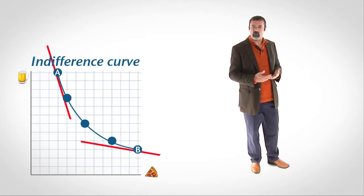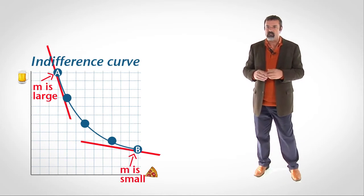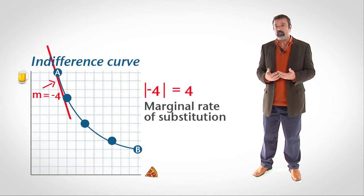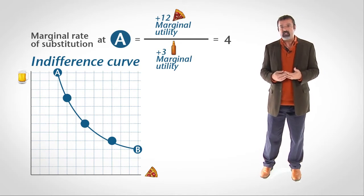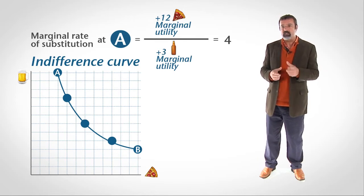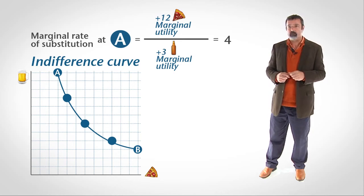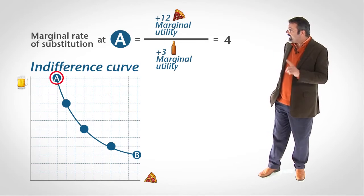If you exchange beer for pizza in the ratio of two to one, your utility will remain constant. Notice that the slope of the indifference curve, the marginal rate of substitution, is large on the left side of the graph and small on the right side of the graph. Bundle A represents three pizzas and twelve beers. The marginal rate of substitution at point A is four. This means that in order to keep your utility constant, you would have to gain four beers for every one pizza you lost.